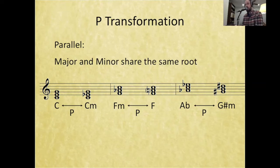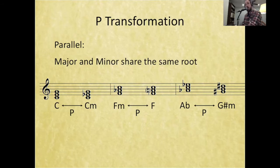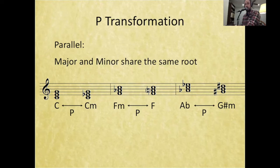Since we're not basing anything around what key we're in—and there's no key that has both F minor and F major in it—A flat major and G sharp minor are also a P transformation, because the root is the same. A flat and G sharp are enharmonically equivalent. Going from A flat major to G sharp minor allows us to reach somewhere like E major, which wouldn't be easily accessible from A flat major through functional harmony.